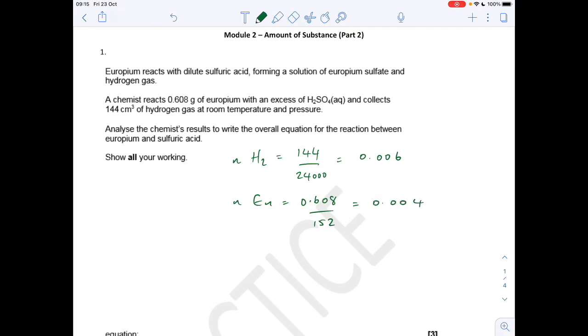So what we can do now is if we divide both of those by the smallest we can see that these are reacting in a 2 to 3 ratio. So what we can do now is we can sort of construct a partial equation. So in other words two moles of europium is reacting with H2SO4 to make 3 moles of hydrogen and europium sulfate. So from the equation you can see that the number of hydrogens on the right is 6. So we're going to need a 3 in front of that. So therefore the europium sulfate must have this formula here. EU2SO4 three times.